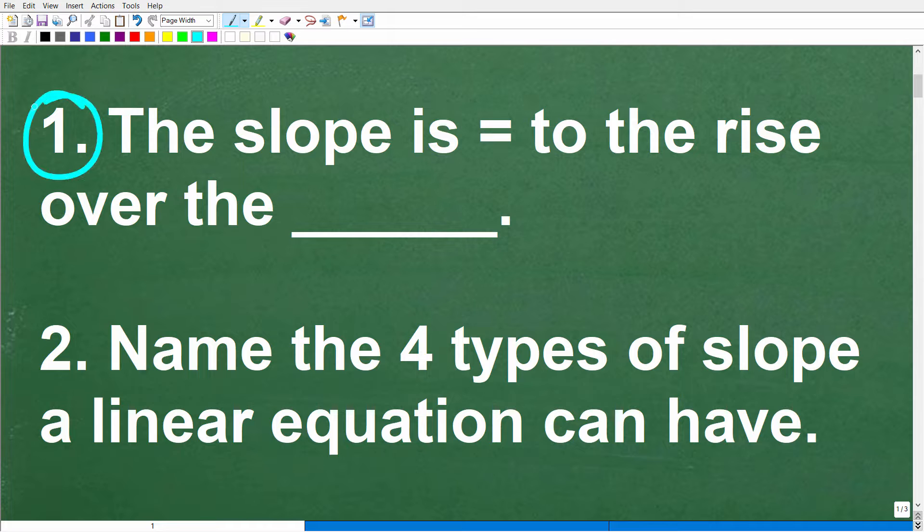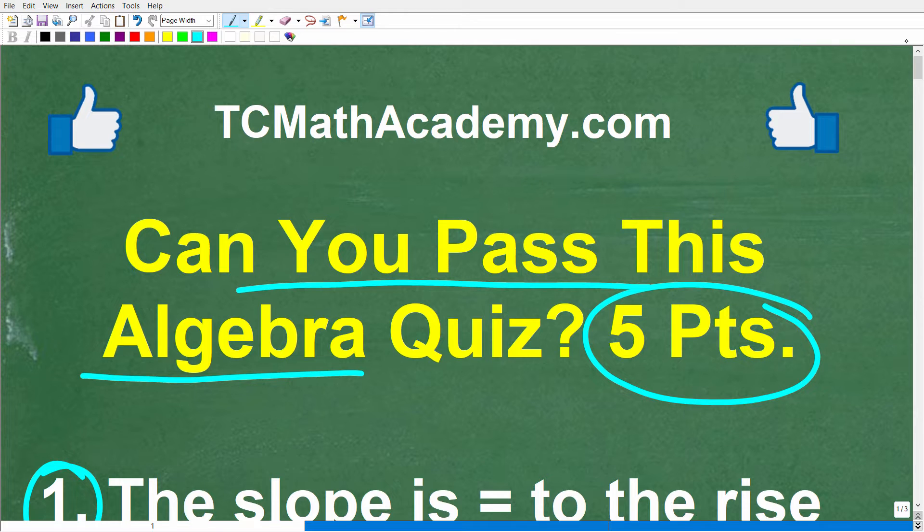The first question is worth one point. The second question is worth four points. Now, if you have the answers, put those into the comments section. I'm going to go through each of these questions, and of course, you can get your score by the end of this video.